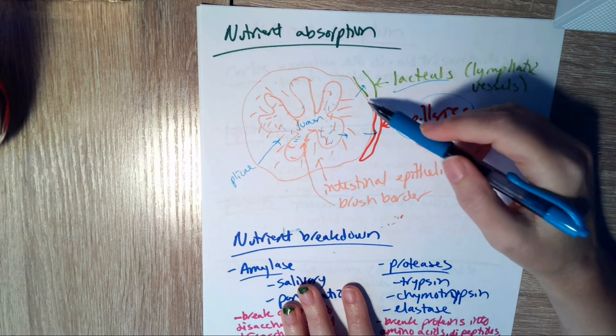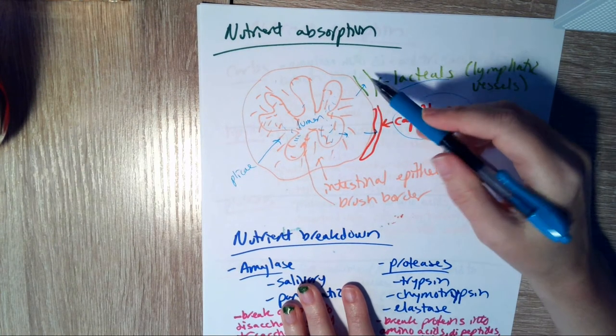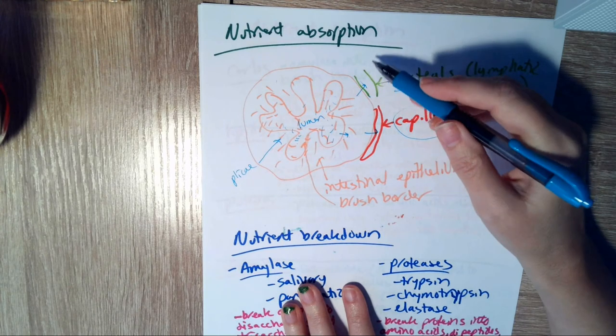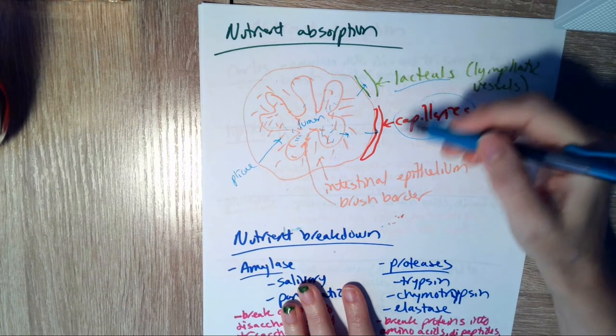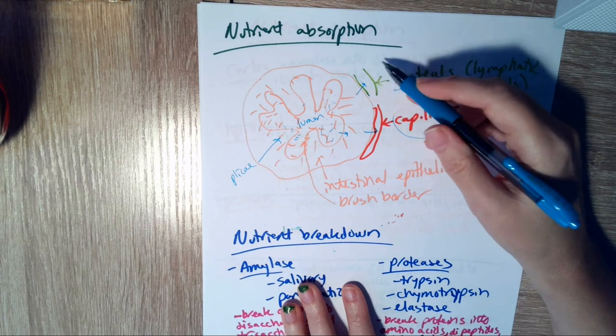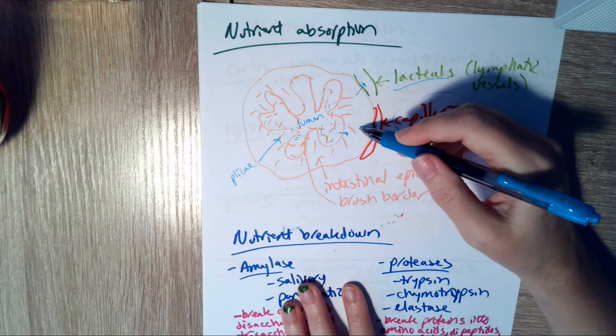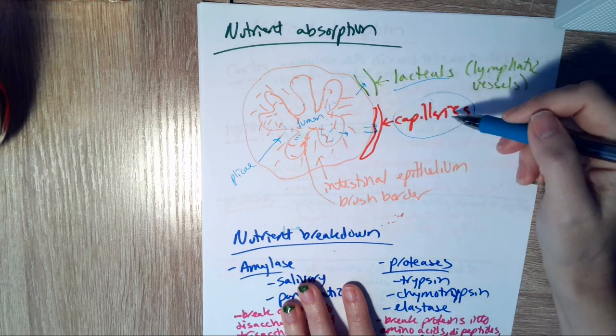Eventually these lacteals will, after being filtered and run through lymph nodes and all that, this lymph is going to end up being put back into your subclavian vein, so it's going to become part of the blood. So eventually those lipids will find their way into the bloodstream. All the other nutrients are going to go straight from the intestinal epithelium right into the capillaries.